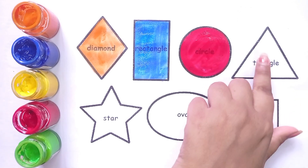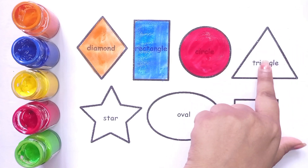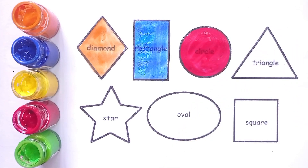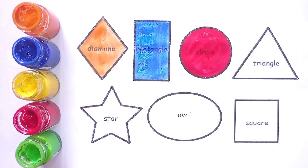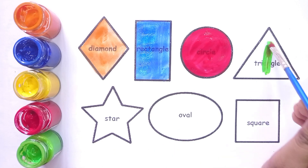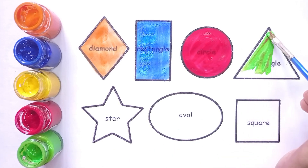Triangle. This is triangle shape. Light green, light green color.